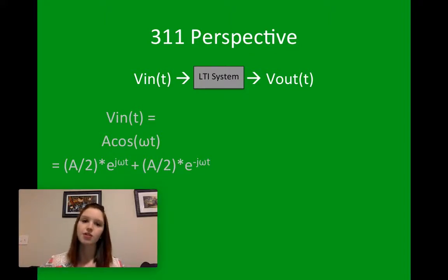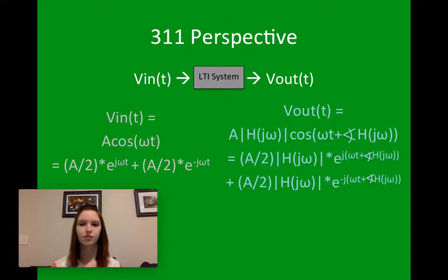We know that A times cosine, if we increase A, is going to increase the amplitude of our cosine function. Here, our Vout is going to be A times the magnitude of H(jω) times cosine of omega t plus the phase of H(jω). And H(jω) is our transfer function here, and we can break it up using the same Euler's method as before.